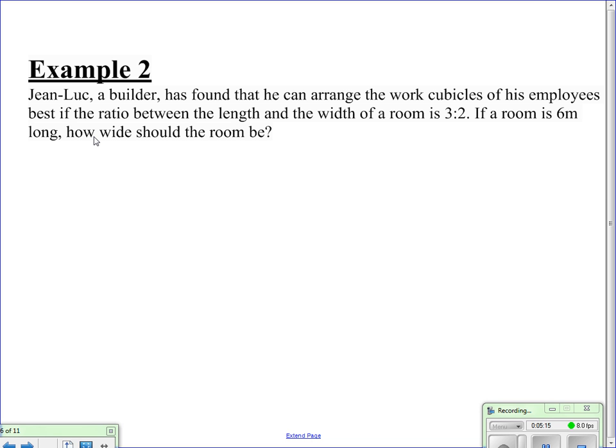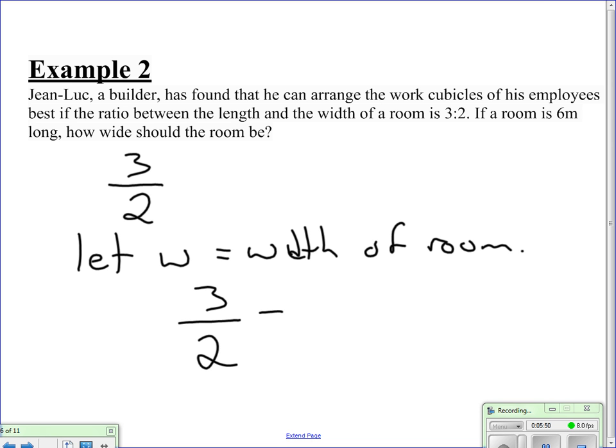Let's look at another example. A builder has found he can arrange the work cubicles of his employees best if the ratio between the length and the width of a room is 3 to 2. If a room is 6 meters long, how wide should the room be? So, again, we're working with another ratio. Let's make that ratio a fraction. Now, let's let w equal the width of the room. So, if a room is 6 meters long, let's set up another proportion. So, in a 3 to 2 ratio, proportionally, that's going to be equal to 6, which is my length, over w, which is what we're trying to figure out.